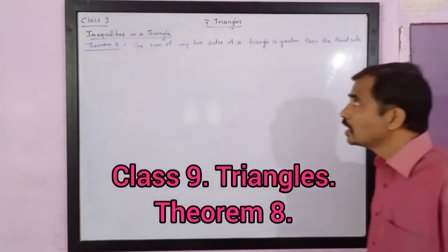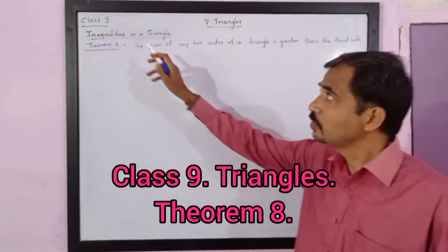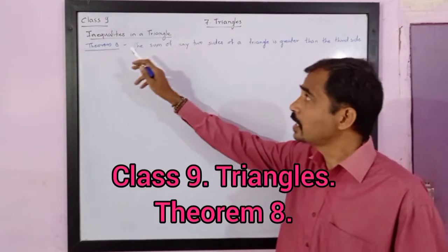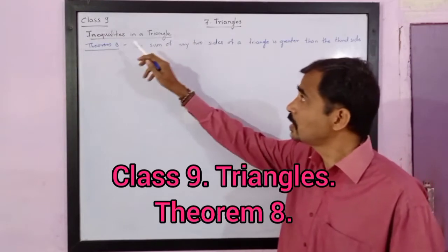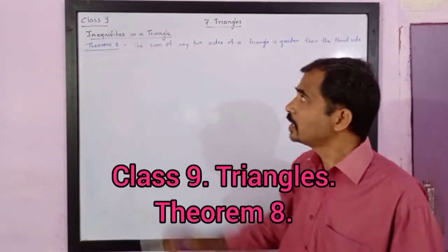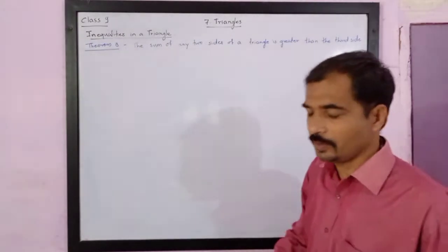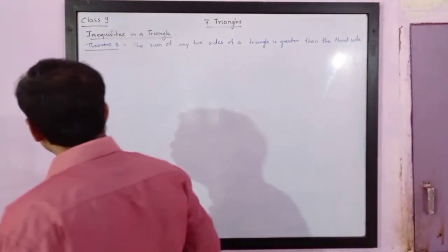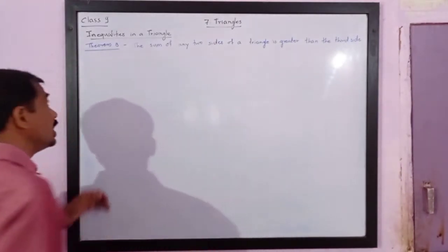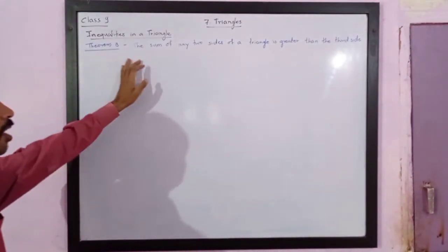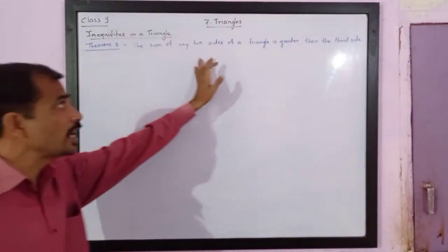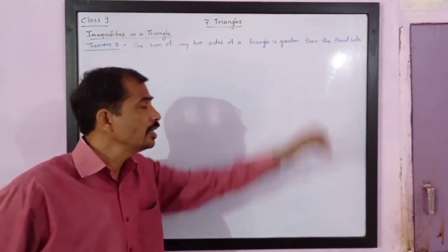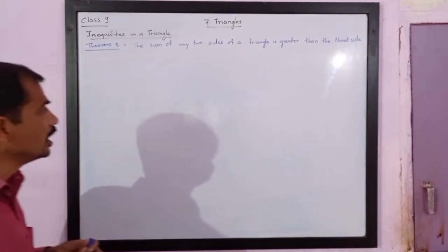Dear friends, in class 9 we are studying chapter 7, triangles, and in that chapter we are studying the inequalities in a triangle. Now, next theorem, theorem number 8: the sum of any two sides of a triangle is greater than the third side.